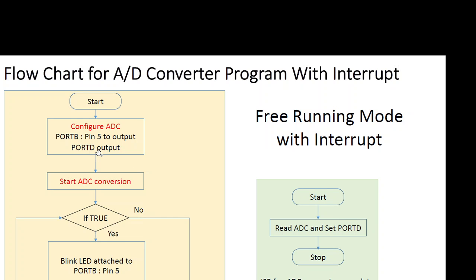Looking at the flowchart: the program begins with configuration of the ADC to free running mode, enabling the interrupt, setting port data directions — port D as output and port B pin 5 as output — and then starting the ADC conversion once at the beginning. In the main loop, the program keeps doing whatever it needs to do without dealing with the ADC directly. Whenever the microcontroller completes an analog-to-digital conversion, it generates the interrupt. Inside the interrupt service routine, port D is set to the ADC output value, and then execution returns to the main program.